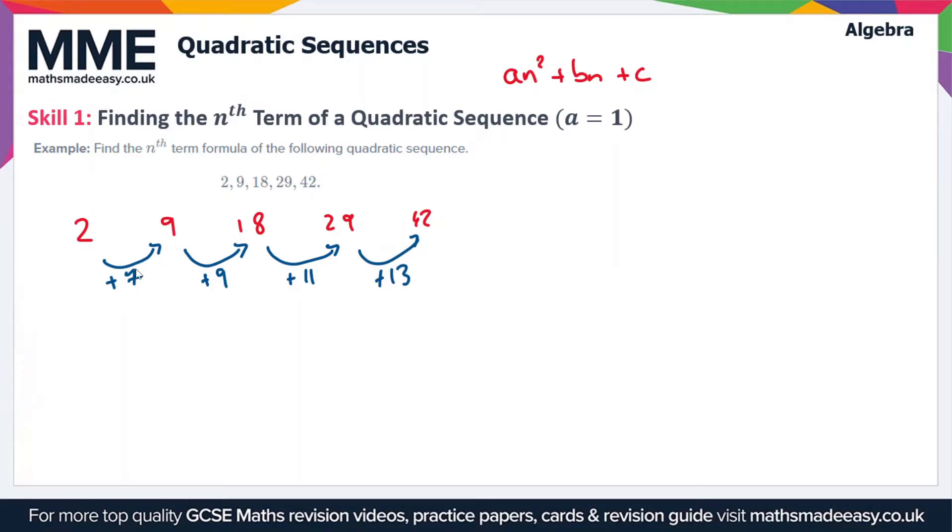Next what we have to do is find the difference between the differences because obviously we've not got a constant difference here. So we need to find what's called the secondary differences between each of these differences. So from plus 7 to plus 9 we've got a secondary difference of plus 2. From plus 9 to plus 11 we have a secondary difference of plus 2 again. And from 11 to 13 we've got another secondary difference of plus 2.